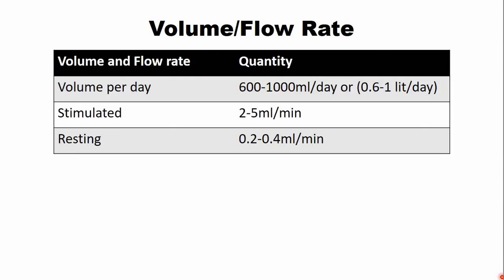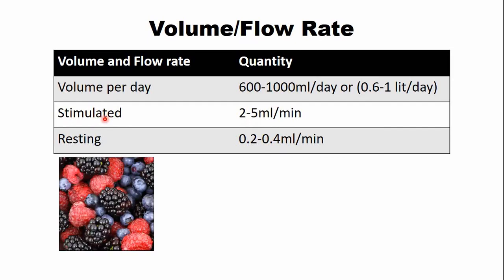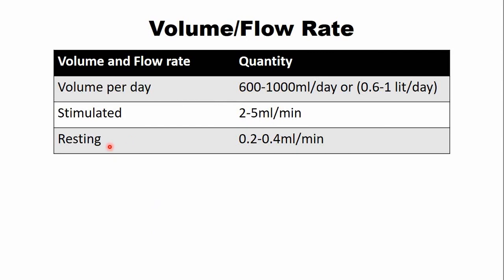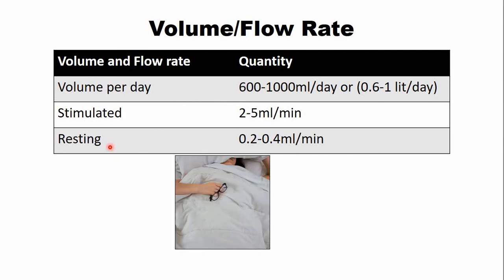What is the normal volume and flow rate of saliva in a day? Salivary flow varies from 600 to 1000 ml per day, or in other words 0.6 to 1 liter per day. The salivary secretion varies throughout the day. For example, stimulated saliva produced in response to a stimulus such as food is 2 to 5 ml per minute, while in resting conditions, for example at night, the salivary flow volume reduces to 0.2 to 0.4 ml per minute.